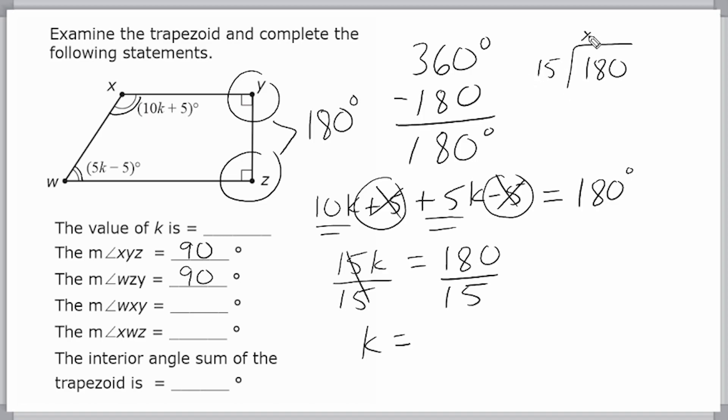Alright, 15 doesn't go into 1, but it goes into 18 once. And if we take one group of 15 from 18, that is 3. Bring down the 0, and 15 goes into 30 twice. So k is equal to 12. So we're going to put 12 in this blank right here. That is the value of k.